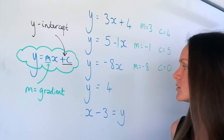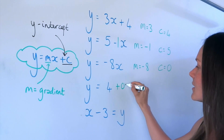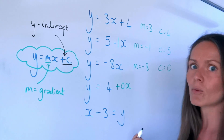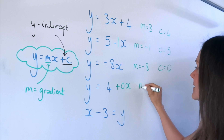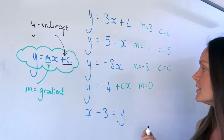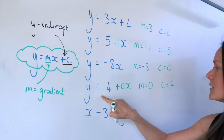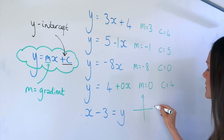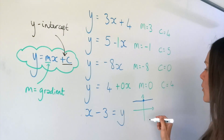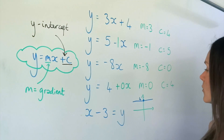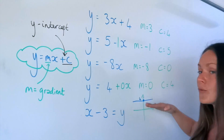In this one it's the other way round — there's no x term. It's like saying plus 0x, which is why we don't bother writing it. So the gradient of this line is 0. But the y-intercept, the number by itself, is 4. This line would be a horizontal line that intersects the y-axis at positive 4, and that's why the gradient is 0 — because it's a horizontal flat line.